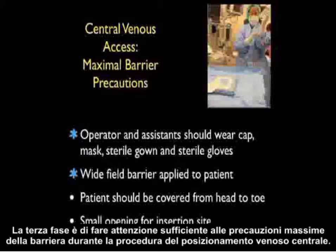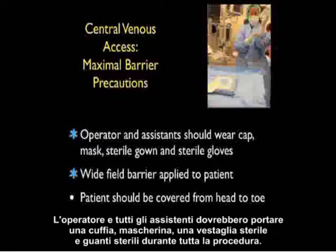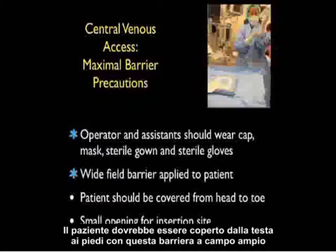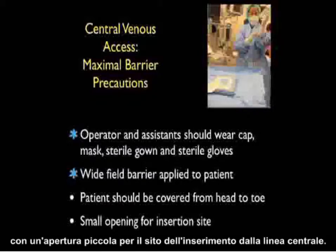The third step is adequate attention to maximal barrier precautions during the central venous placement procedure. The operator and all assistants should wear a cap, mask, sterile gown, and sterile gloves throughout. It is important to place a wide field barrier over the patient during the procedure, covering the patient from head to toe with only a small opening for the insertion site of the central line.